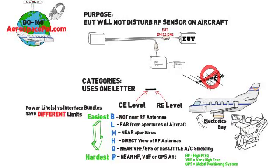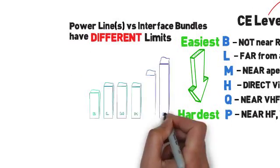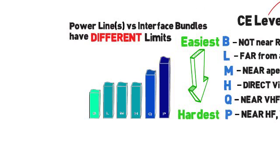All categories except P have different levels for measuring emissions on the power lines versus the interface bundles. So that's something to be aware of. L, M, and H are tested to the same exact level for CE, but they have different levels for RE.